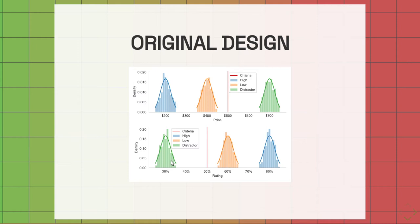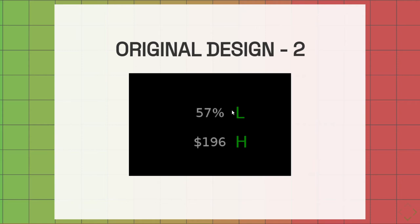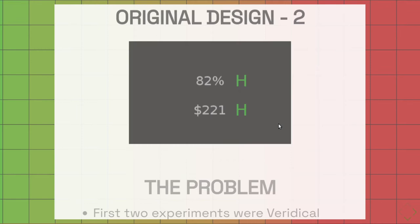They should accept a hotel if the price came from the high or low salience and the rating came from the high or low salience. So they were given just the numbers, the price and the rating. If they're both high or low, then they should accept. If one or the other is a distractor or both are distractors, then they should reject.